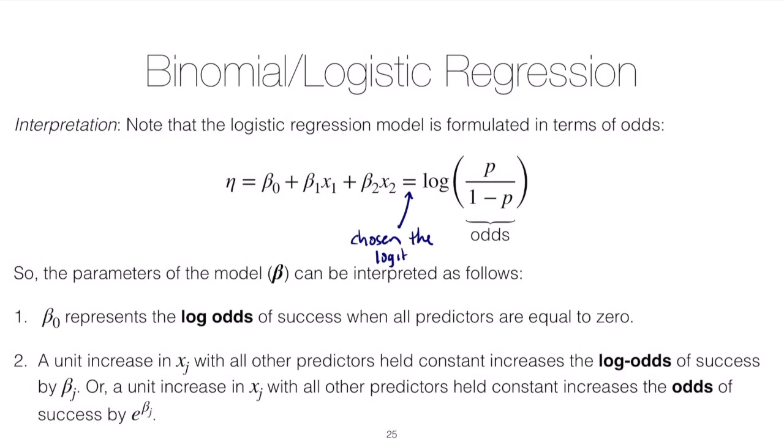This interpretation that we're about to go through only holds for that link function. It doesn't hold, for example, for the probit link function. But notice that the logit link function is given in terms of the odds—it's actually the log odds. That gives us a hint as to how we can interpret the beta parameters. First, let's start with the intercept beta_0. Beta_0 represents the log odds of success when all predictors are equal to zero.